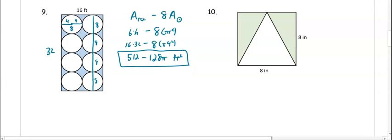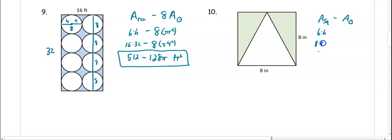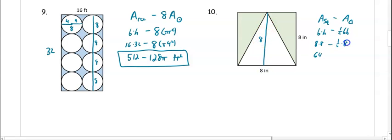In number ten, we have a square and a triangle inside it, so we want the area of the square minus the area of the triangle. The area of the square is 8 times 8 equals 64. The area of the triangle is one half times base times height; the base is 8 and the height spans the square so it's also 8, giving one half times 8 times 8 equals 32. So the shaded area is 32 inches squared.